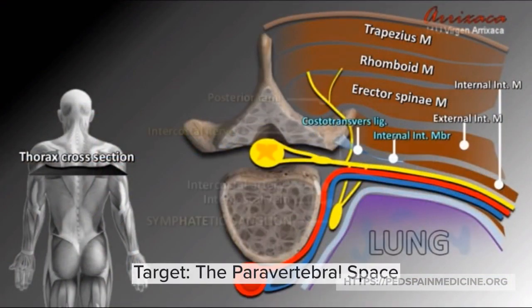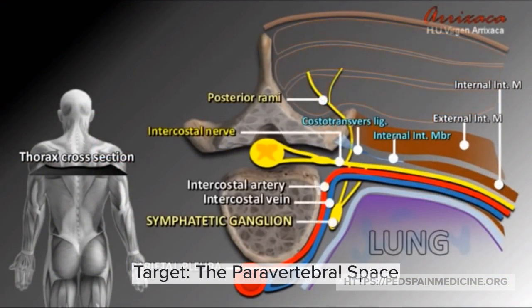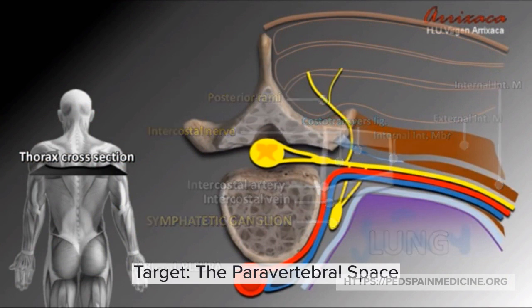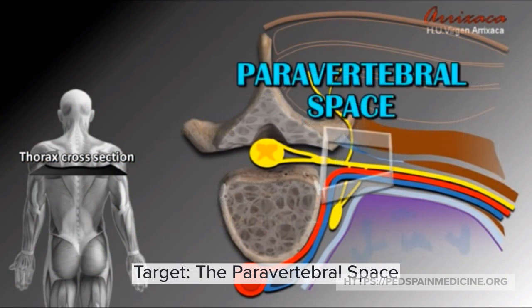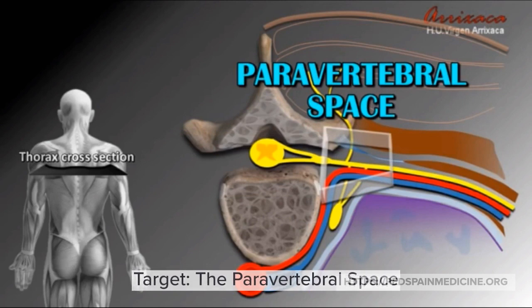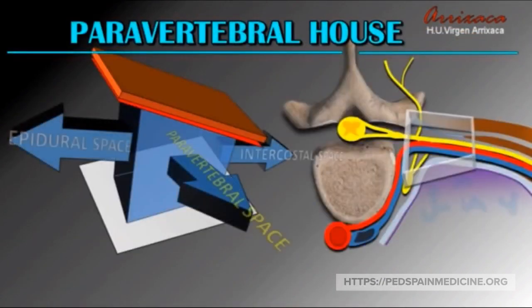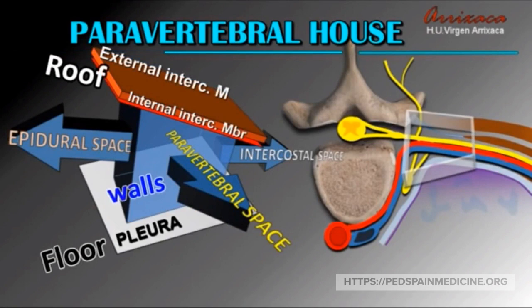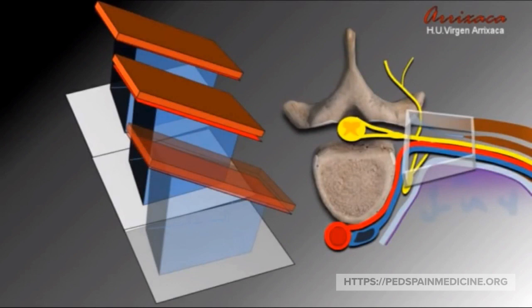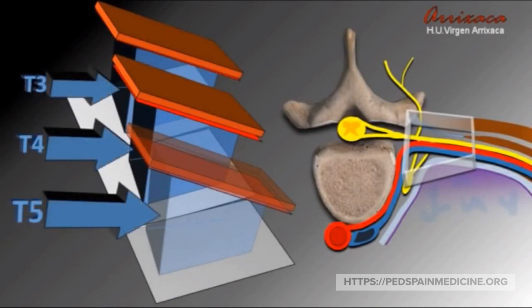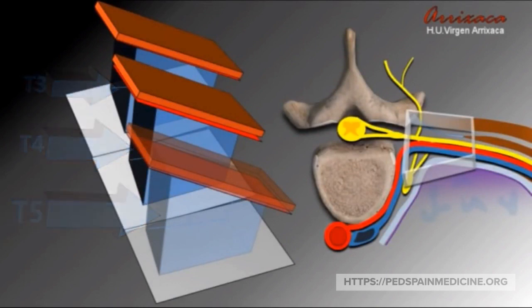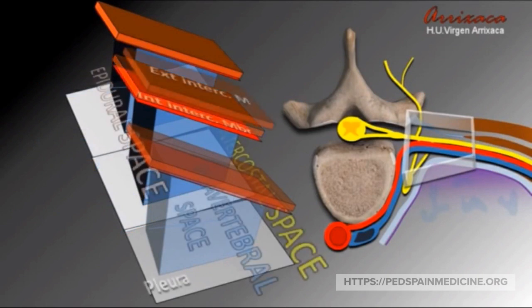Our target is the paravertebral space. Note that the costo-transverse ligament and the internal intercostal membrane form a boundary together. The paravertebral space is like a house in which the roof is the external and internal intercostal membranes and the floor is the pleura. This is a house without walls, so when we inject local anesthetic, it is free to flow between spaces.